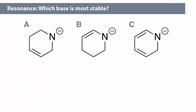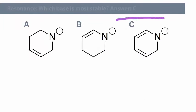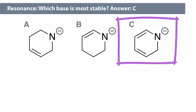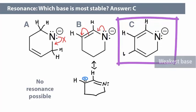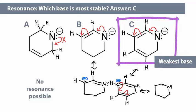Of the three bases shown here, which one is most stable? Base C is most stable. Base A has no resonance possible. Base B has two possible resonance structures, whereas Base C has the most resonance structures. Be sure to draw them out to see how resonance affects the relative stability of the species.